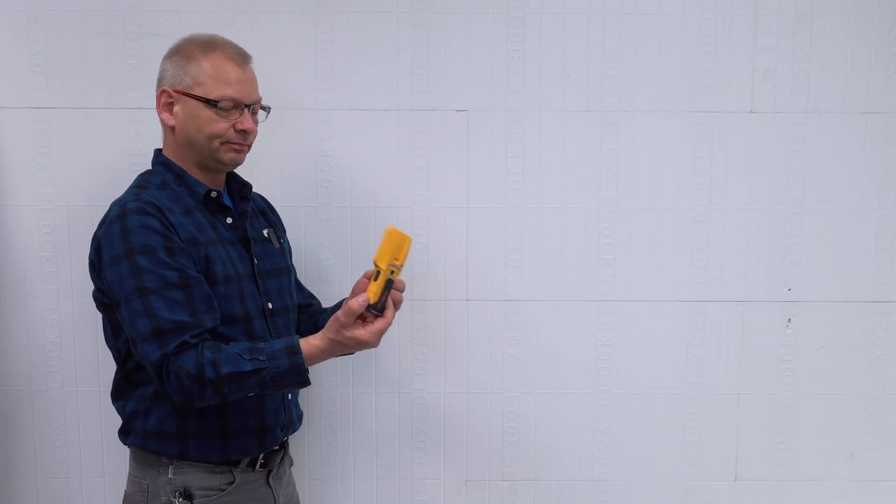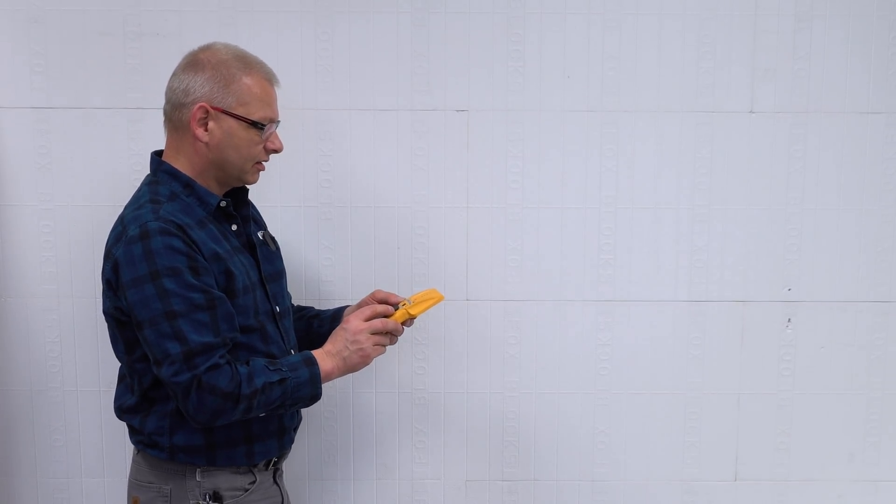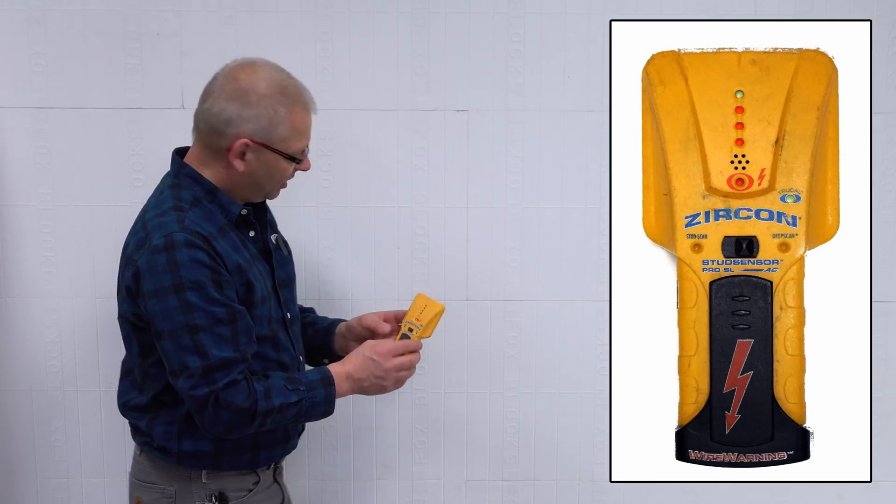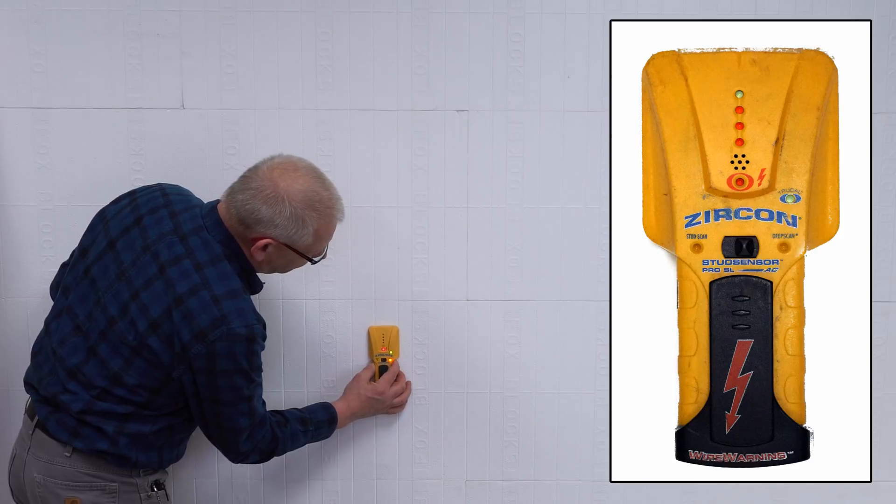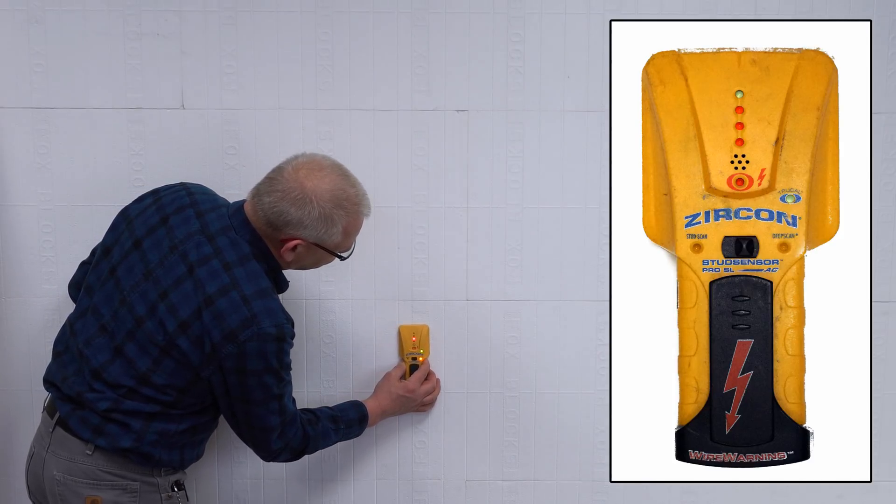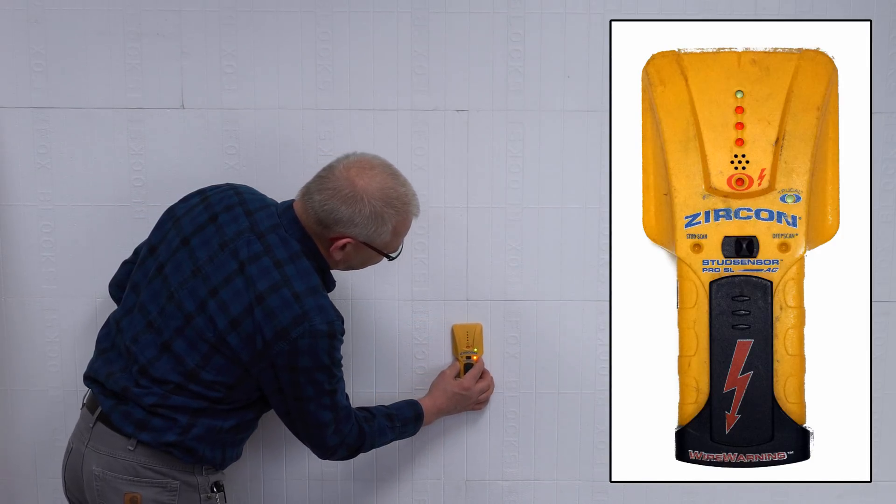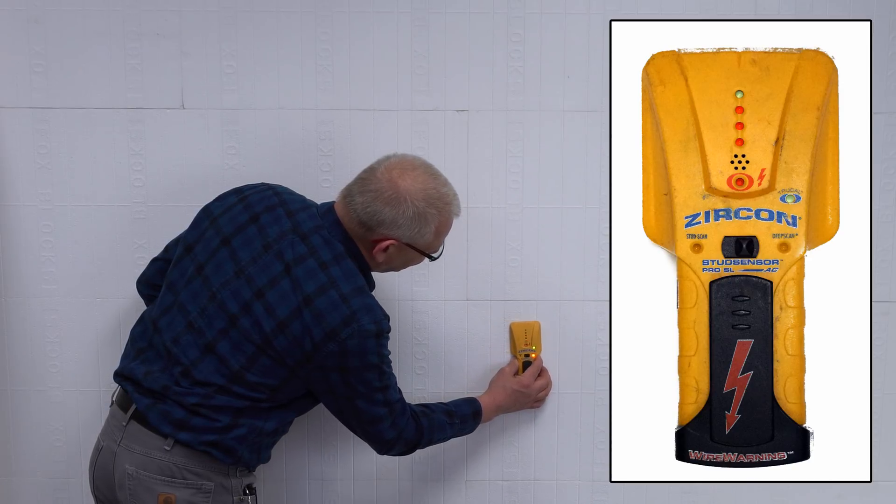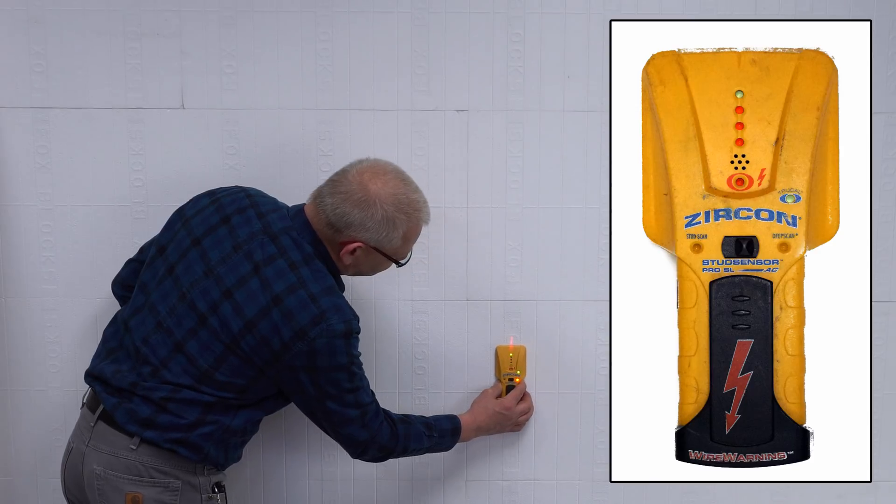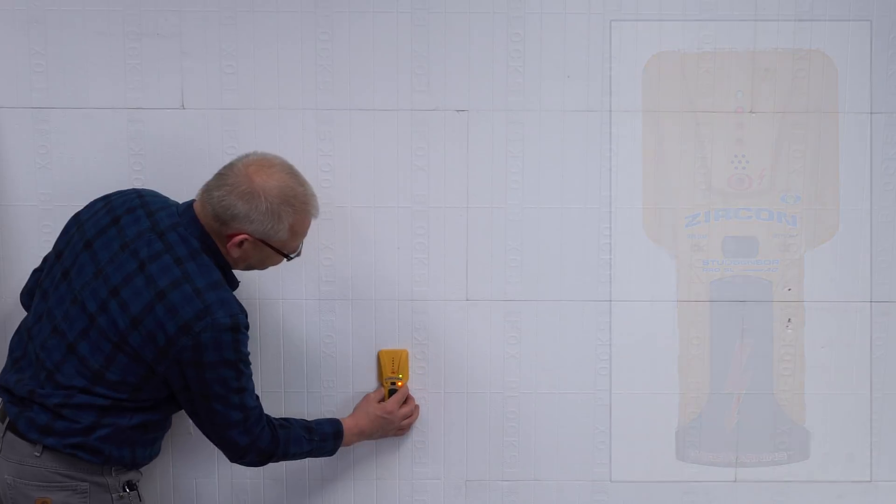So let's try another one. This is a Zircon. I've had this one for a long, long time and it has deep scan as well. It's got stud scan and deep scan. I always put it on deep scan. Watch this - I start coming across, it's thinking, and there's the stud. It found it. Let's go to the next one. Eight inches on center for the studs. It sort of thought about it but no. There, it did find that one. I'll keep coming across. You know, bottom line, they really don't work.